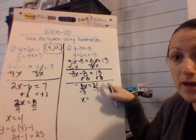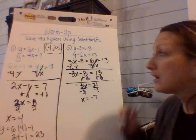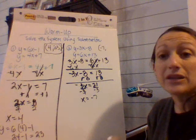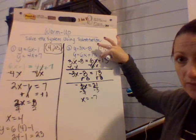So again, I just found half of my solution. I know that the x coordinate of my solution is negative 7. I'm going to substitute it back into either equation to find my y variable. So instead of using the first one, let's use the second one this time. It doesn't matter, you should get the same solution.